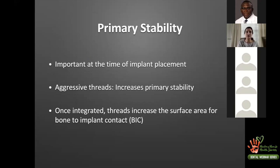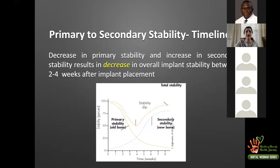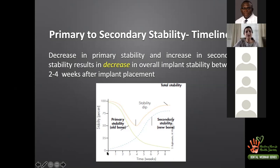The graph shows the green line representing primary stability — it is very high at day zero (day of implant placement) but drops as the weeks advance, because the bone in which the implant was placed is remodeling. The blue dotted line represents secondary stability — on day zero there is none, but as weeks pass new bone forms, giving us secondary stability.